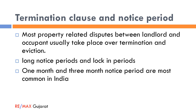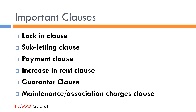The notice period is the time the other party gets to make alternative arrangements before the agreement is actually terminated. A one-month notice period means the party willing to terminate must notify the other party at least one month before the intended termination. One- and three-month notice periods are most common in India, although parties can insist on even longer ones. Even if the owner wants to sell the property, he must respect the notice clause.